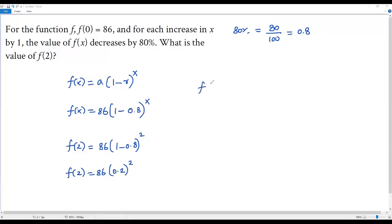f(2) equals 86 times, when I take the square of 0.2, it becomes 0.04. So f(2) equals, when I multiply 86 by 0.04, I'm getting 3.44. So the value of f(2) is 3.44.